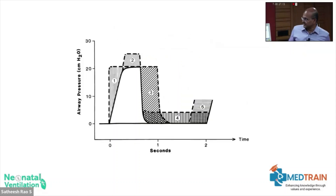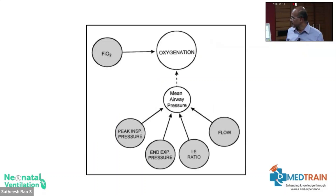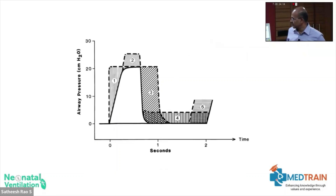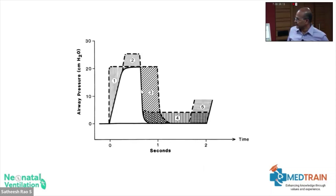Each parameter affects oxygenation by changing the area under the pressure-time curve. Increasing PEEP raises this area. Increasing flow creates a square wave, also increasing the area. Increasing PIP increases the area as well. By increasing PEEP you may actually reduce delta P if PIP is not adjusted accordingly.